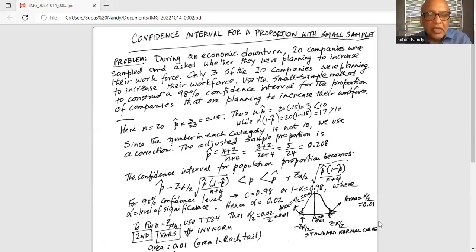We use a correction factor. This adjusted sample proportion is p-hat equals x plus 2 divided by n plus 4. So we adjust the number of successes by 2 and the sample size by 4. This is because we adjust the number of successes as well as number of failures by 2.